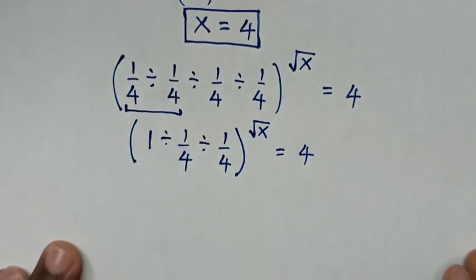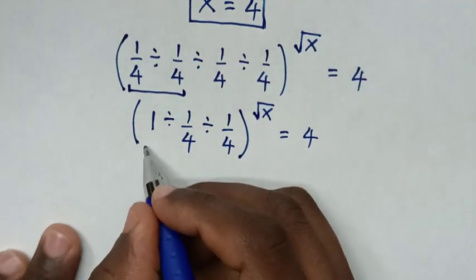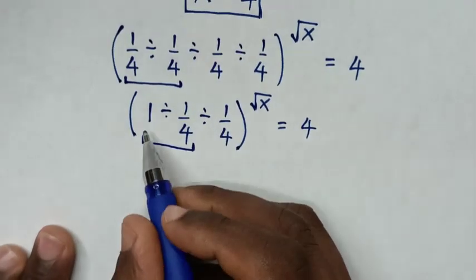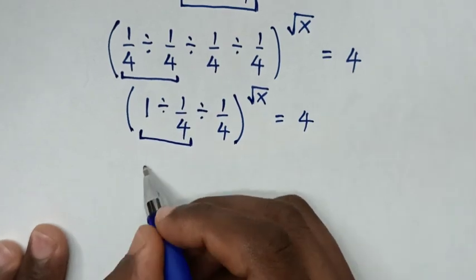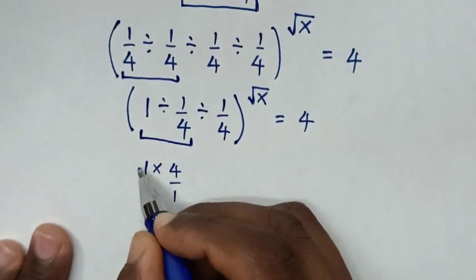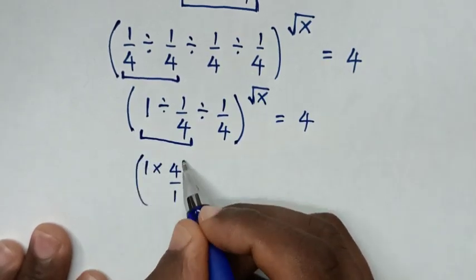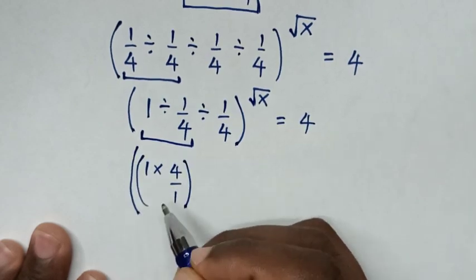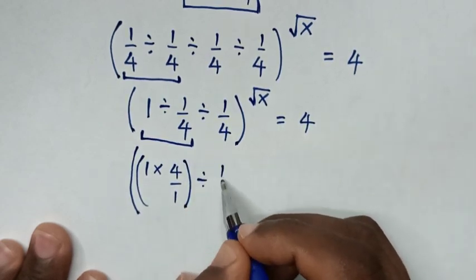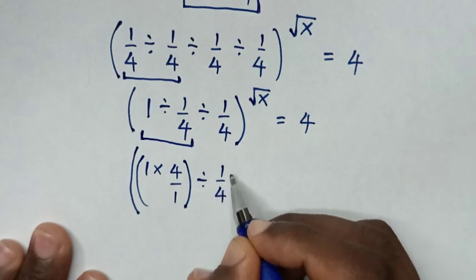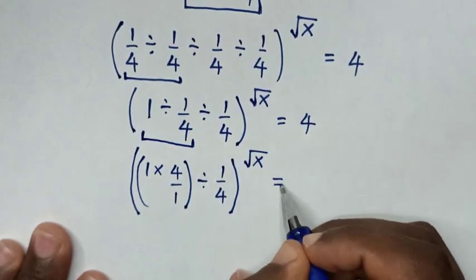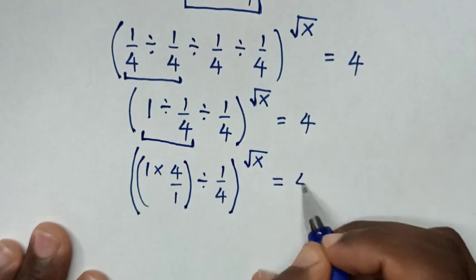In the next step we deal with the first operation: 1 divided by 1 over 4 is the same as 1 times 4 over 1, then bracket, divided by 1 over 4, bracket, to the power of square root of x, is equal to 4.